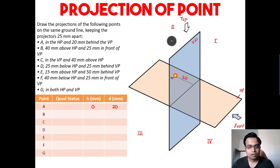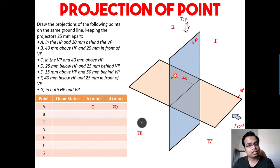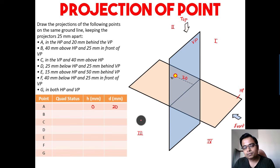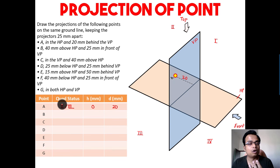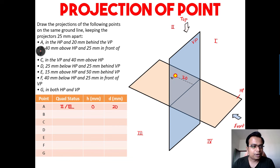Point A lies on the boundary of the second and third quadrant — it's a case of both. It doesn't matter which H-D principle you apply; you'll end up with the same orthographic projection. In second quadrant, h and d are both above the XY line. In third quadrant, d is above and h is below. Either way the result is the same.